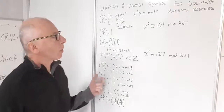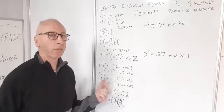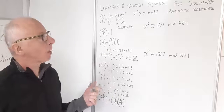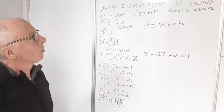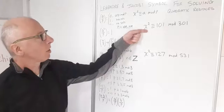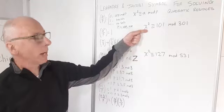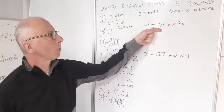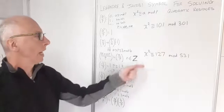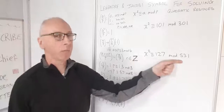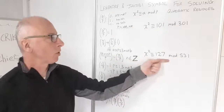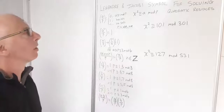I have got two questions here involving Legendre and Jacobi symbols to solve quadratic residues. My two questions are: does x² ≡ 101 mod 301 have a solution? And does x² ≡ 127 mod 531 have a solution?